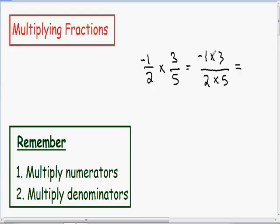This simplifies to negative 1 times 3 in our numerator which is just negative 3, and 2 times 5 in our denominator which is just 10.